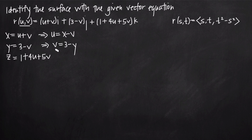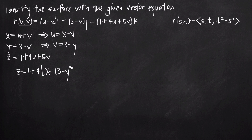Now we take these values for u and v and plug them into our equation for z. We have z equals 1 plus 4 times u. Since u equals x minus v, and v equals 3 minus y, we substitute: z equals 1 plus 4 times (x minus (3 minus y)) plus 5 times (3 minus y). We're substituting 3 minus y in for v to eliminate both parameters and get z in terms of x and y only.